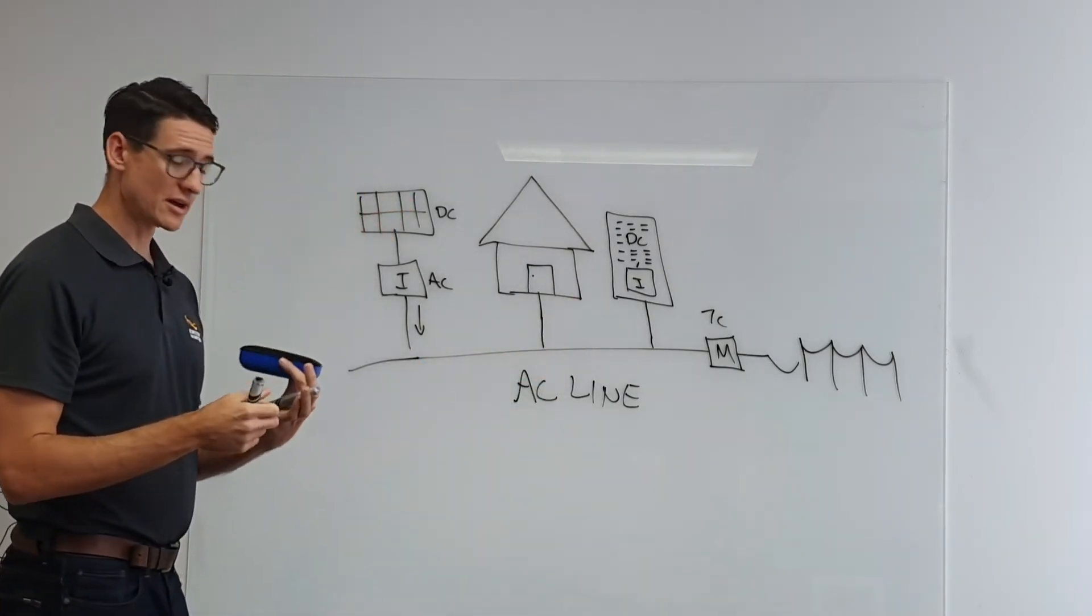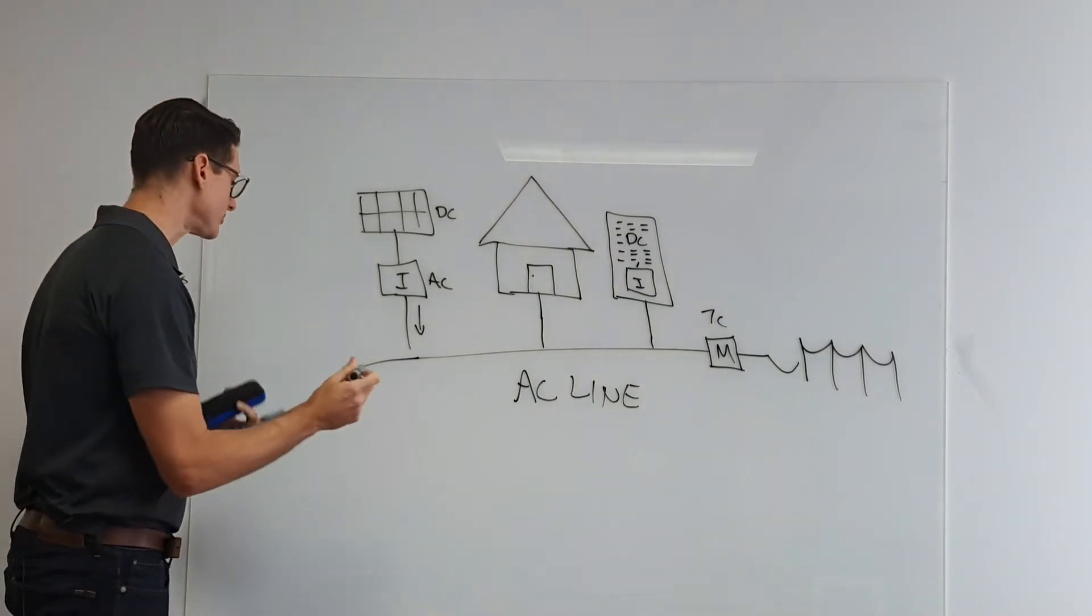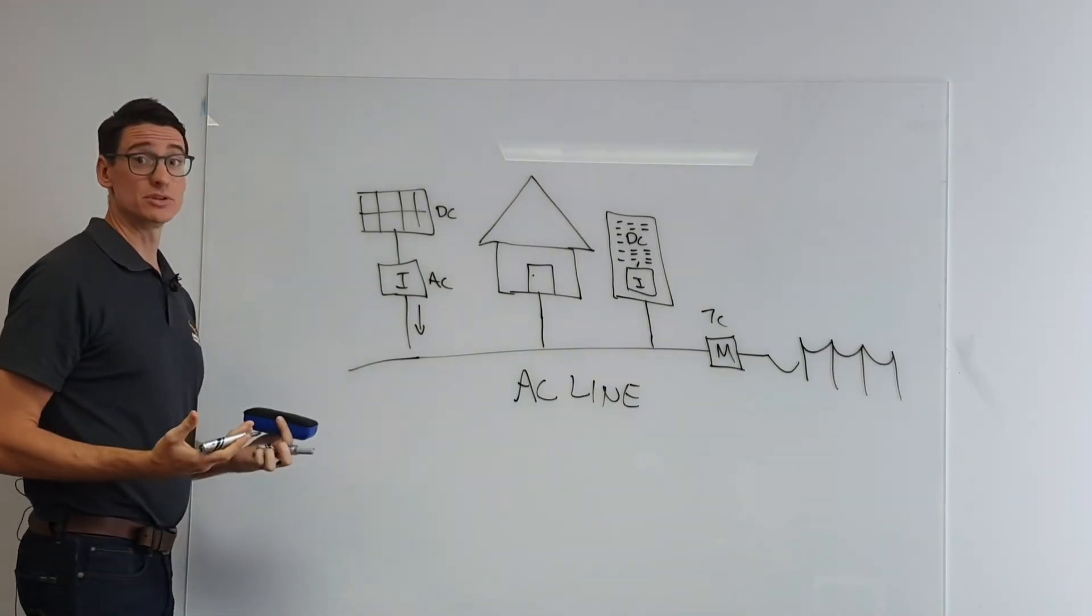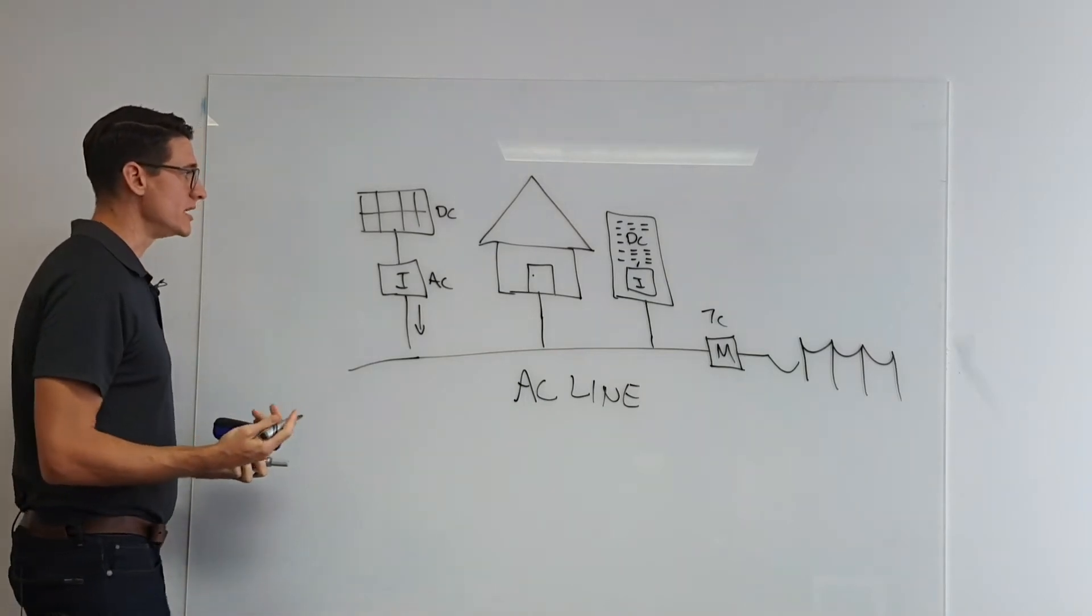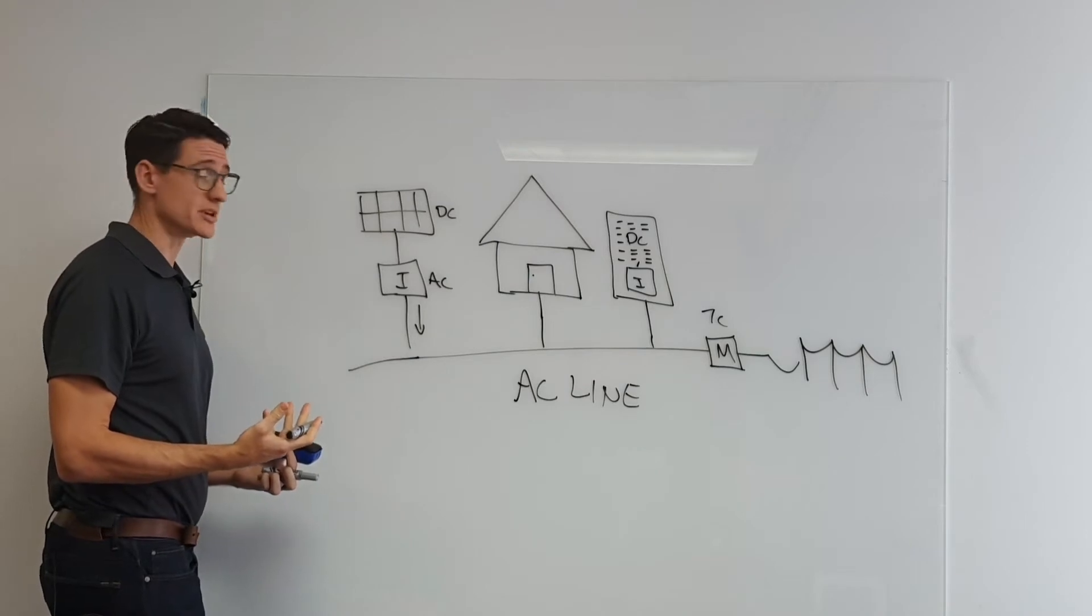Now the other type of battery out there is what we'd call a DC coupled solution. So a DC coupled solution is a little different. That's when the way it's described is you're getting charged directly from the solar panels themselves.